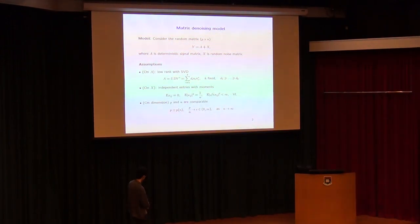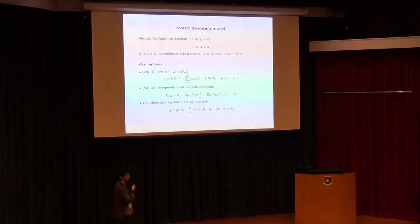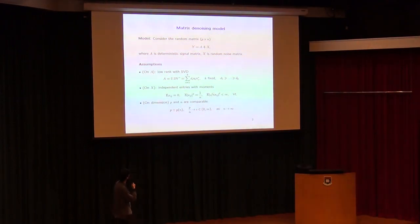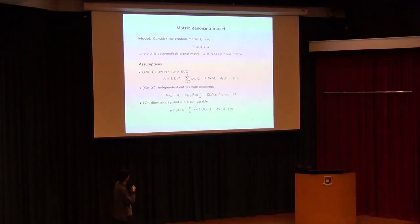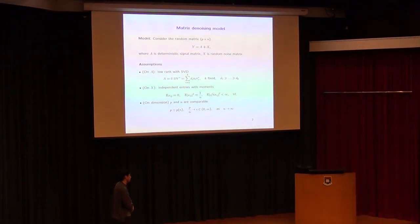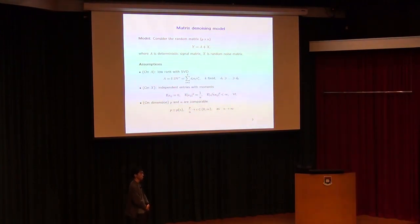In a high-dimensional case, you cannot recover A in general. However, if you assume a special structure — for example, if A is low-rank — then recovery is possible to a certain extent. We assume A is low-rank and has the singular value decomposition written as a product of a T×K matrix, a K×K diagonal matrix D, and a K×N matrix. D consists of the singular values, and U and V consist of the left and right singular vectors. We can also write A as a sum of K rank-1 matrices, where the d_i are the singular values and u_i, v_i are the left and right singular vectors.